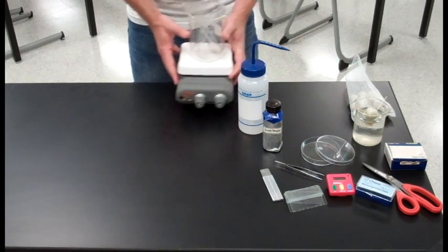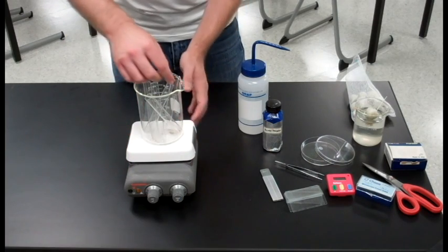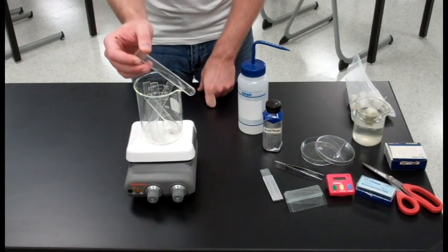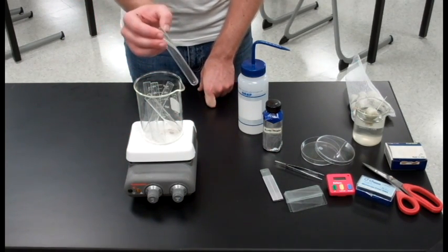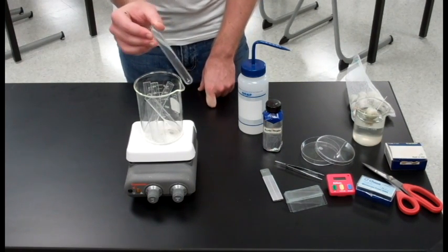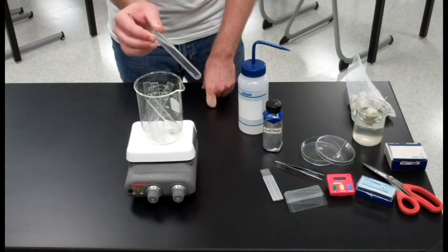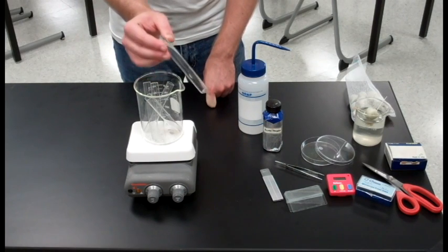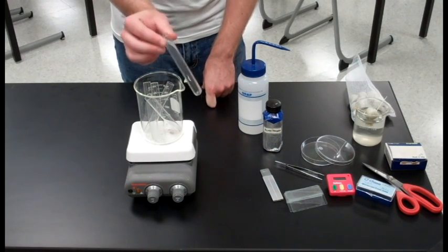The fixative setup should look something like this. Your test tubes will have the fixative solution in them. Remember fixative is nine parts 45% acetic acid to one part one molar hydrochloric acid. Mix that up and then put two to three milliliters in each test tube.